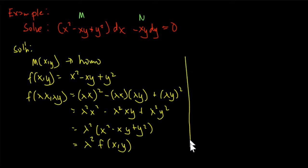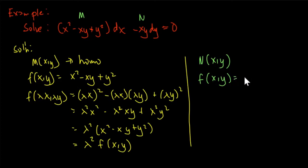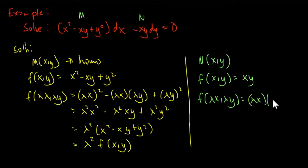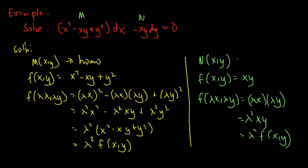We also need to test N(x, y). Our function N(x, y) is xy — just neglect the sign. We substitute lambda x for x and lambda y for y, giving us (lambda x)(lambda y) equals lambda squared xy, which equals lambda squared f(x, y). So this is also homogeneous. Our two given functions M and N are both homogeneous.